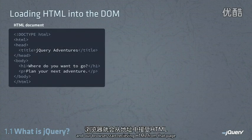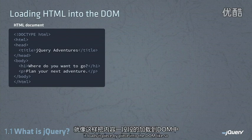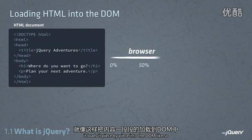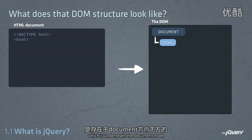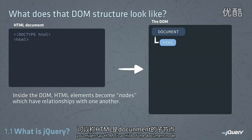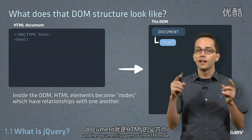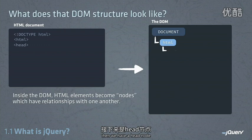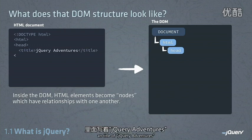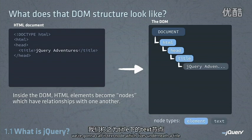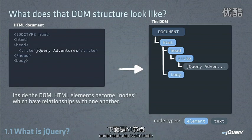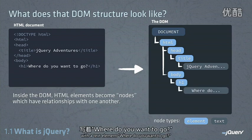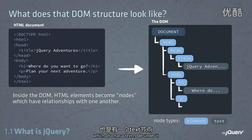When we go to a URL and our browser starts receiving HTML from that web page, it loads it piece by piece into the DOM. As it receives each element, it starts building nodes inside of our DOM. So here you can see it has an HTML node, which is underneath the document node. You might say HTML is a child of the document node. Then we have a head node, a title node, and a text node for the title. Then we have the body node, which is a sibling to the head node. Underneath that is an H1 node and a paragraph node.